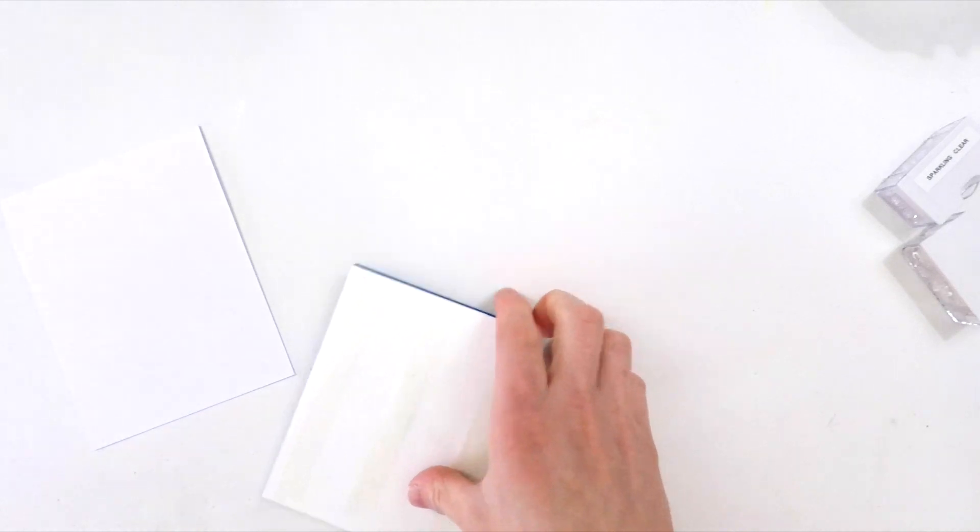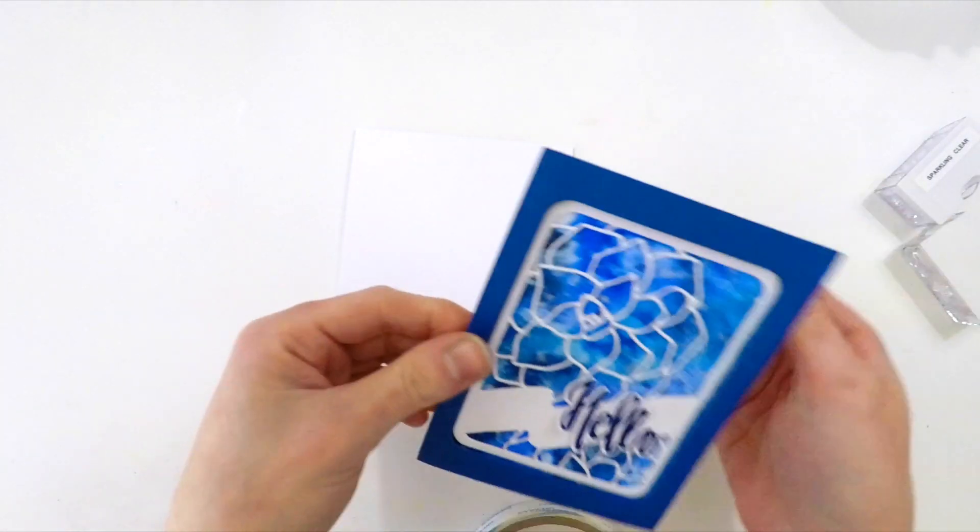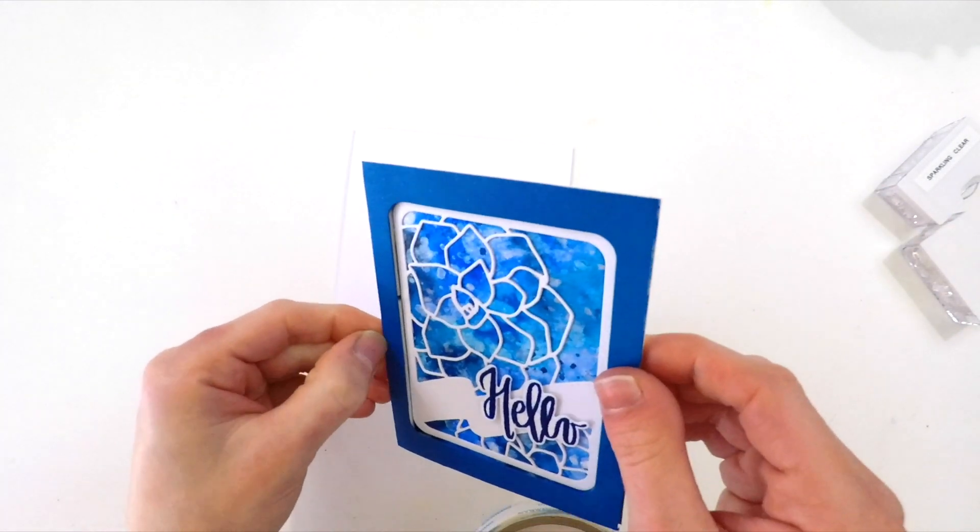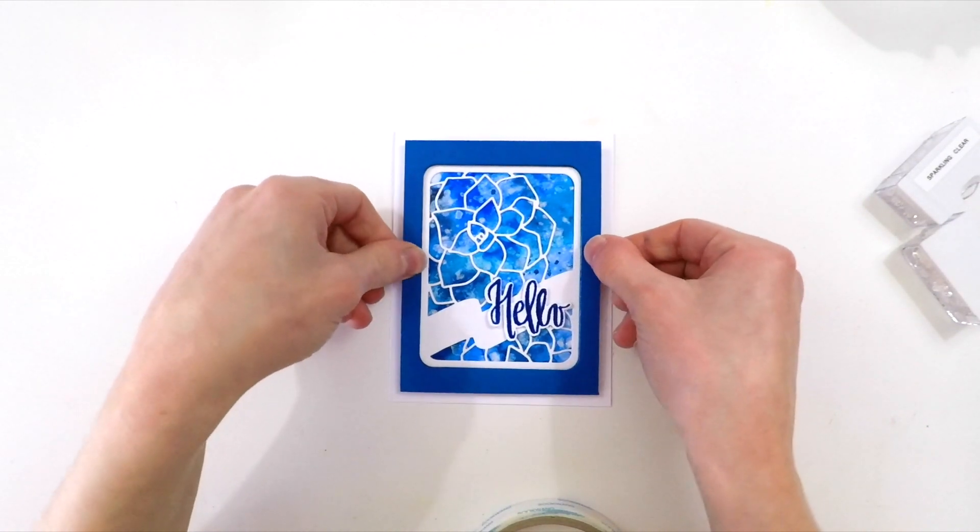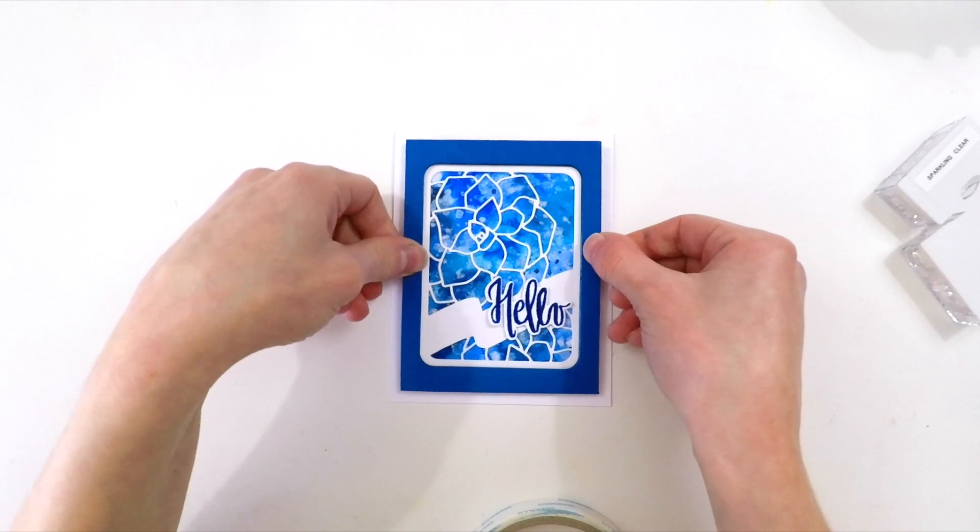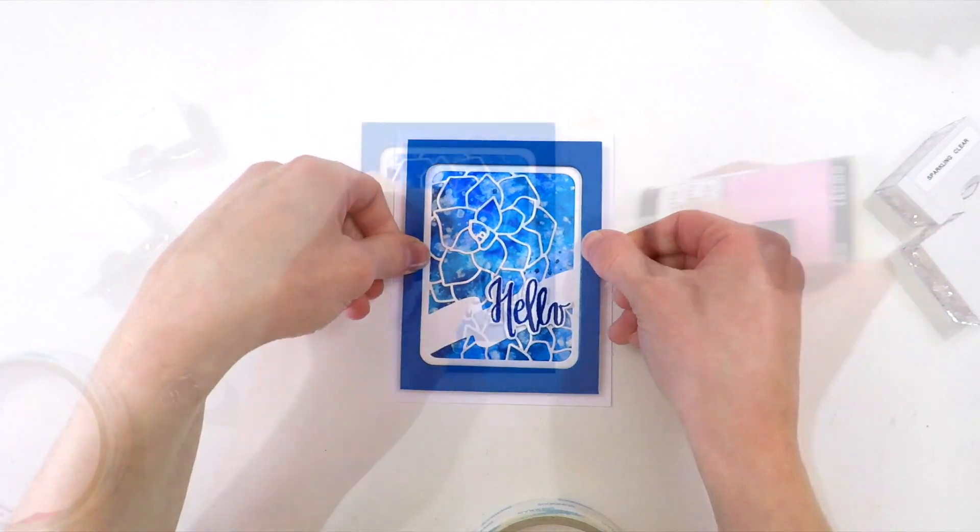I added some double-sided adhesive to the backside of this entire panel, and I'm going to add this onto a piece of white cardstock. That'll mat this beautiful watercolor panel and frame nicely, and I think it really draws your eye into the center area of the card.